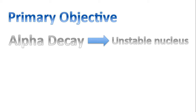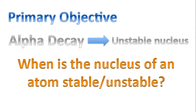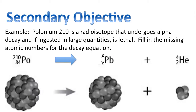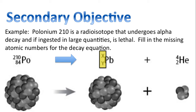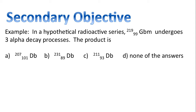Alpha decay occurs as a result of an unstable nucleus. So the real question is: when is the nucleus of an atom stable or unstable? Our secondary objective will be to analyze questions like these. Polonium-210 is a radioisotope that undergoes alpha decay, and if ingested in large quantities, is lethal — we'll fill in the missing atomic numbers for the decay equation and solve for x and y. We'll also look at an example where 219-99 GBM undergoes three alpha decay processes, and determine the resulting product.